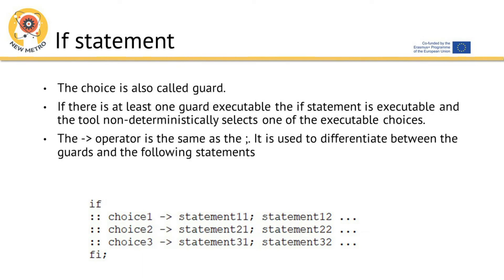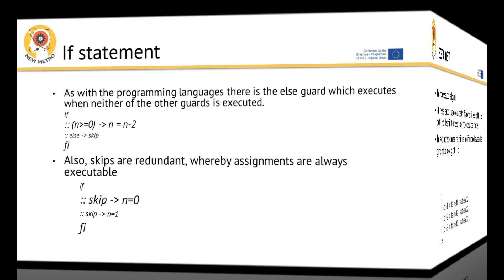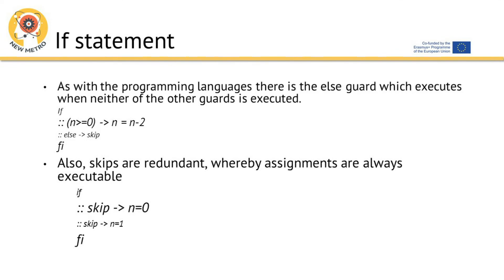In the if statement, each choice is also called a guard. If there is at least one guard executable, the if statement is executable and the tool non-deterministically selects one of the executable choices. The '::' operator is used to differentiate between the guards in the following statements. There is also an else guard which executes when none of the other guards is executable. Skips are redundant, whereby assignments are always executable.